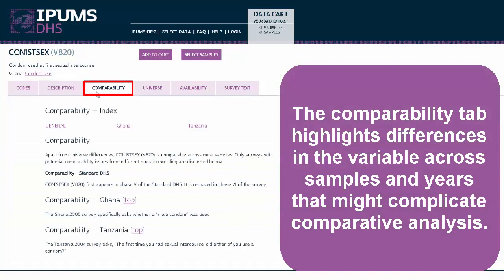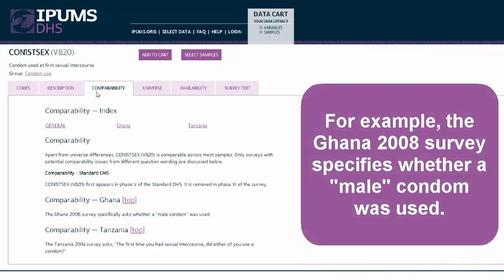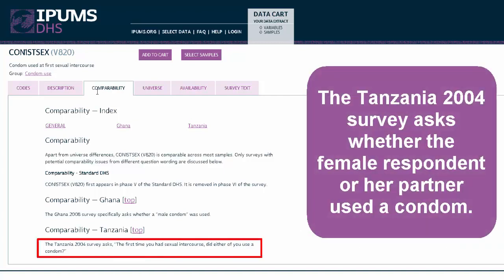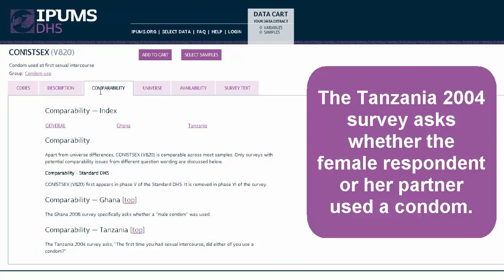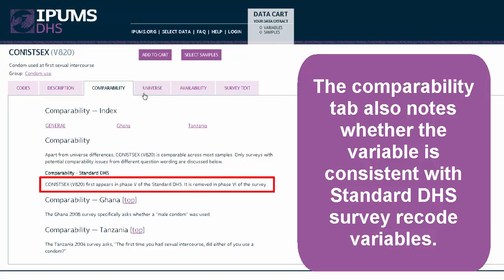The Comparability tab highlights differences in the variable across samples and years that might complicate comparative analysis. Particularly important differences from the general standard or changes across time in one country are noted under the Comparability country headings. For example, the Ghana 2008 survey specifies whether a male condom was used. However, the Tanzania 2004 survey asks whether the female respondent or her partner used a condom. The Comparability tab also notes whether the variable is consistent with the standard DHS survey recode variables.